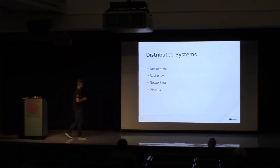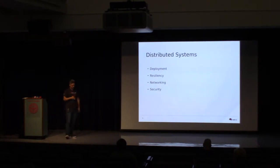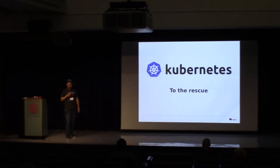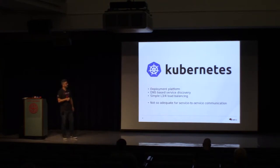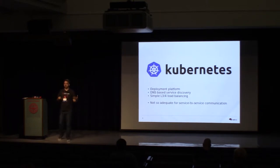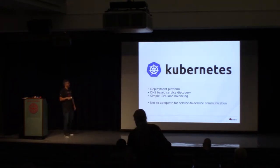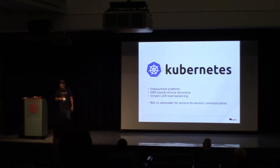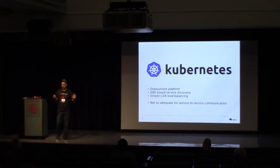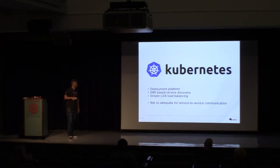Security is also a concern, because now our data is passing through the network. Kubernetes solves some of those problems — for example, deployments, because Kubernetes is a deployment platform born to fix that problem. Kubernetes also has service discovery based on DNS, and a simple load balancer at L2/L4. But Kubernetes does not solve all of the service-to-service communication problems.